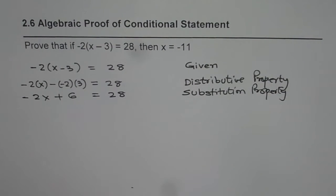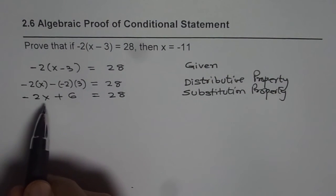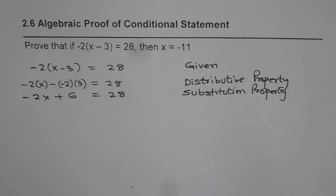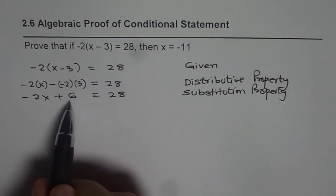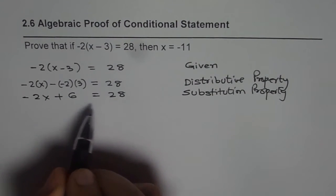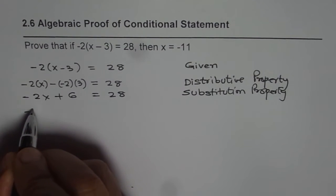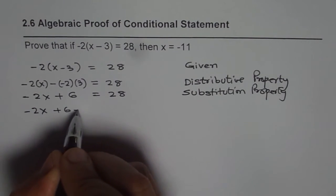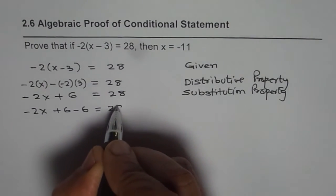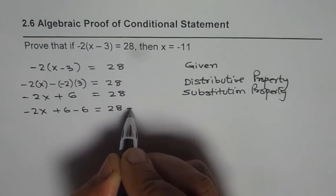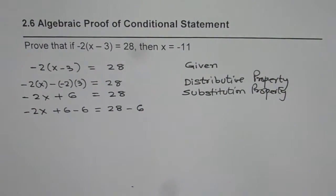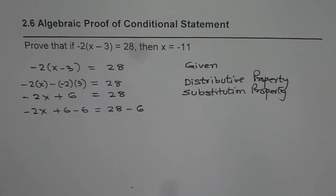What should be the next step? We need to find the value of x, rather prove that x = -11. Next step should be to remove +6. We can do that by subtracting 6 from both sides. Can you tell me which property I used at this stage? It is important to justify each statement. That is what algebraic proof is all about.